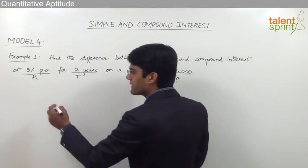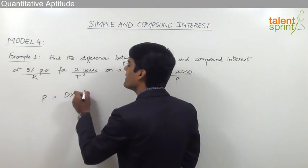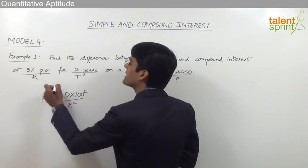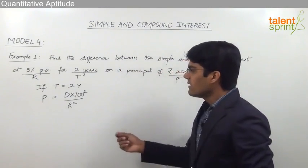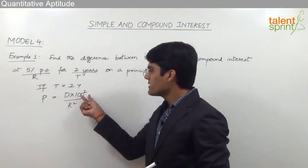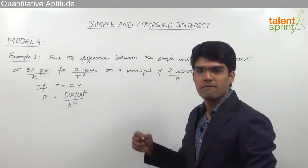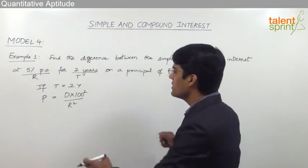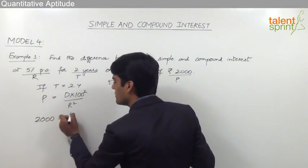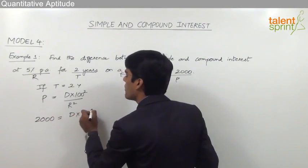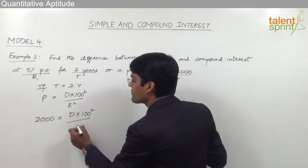As already discussed, the principal can be taken as D into 100 squared by R squared when the time period is equal to 2 years. Since the time period given in the question is 2 years, we use P equals D into 100 squared by R squared. Substituting the values: principal is equal to 2000, so 2000 equals D into 100 squared divided by R squared, and R is 5, so R squared is 25.